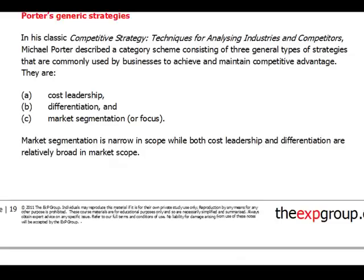This is on page 19 in the notes and I'm sure most of you have some knowledge of those generic strategies. If anyone knows anything about Porter, they will always be able to quote that there is a cost leadership, differentiation, and focus strategy. These generic strategies were developed by Porter after years of research. Cost leadership and differentiation are the real strategies, while market segmentation is a choice — within that choice, a company will still either be a cost leader or a differentiator.